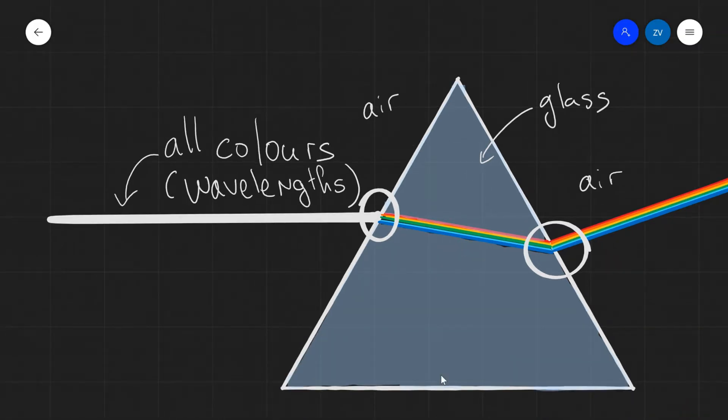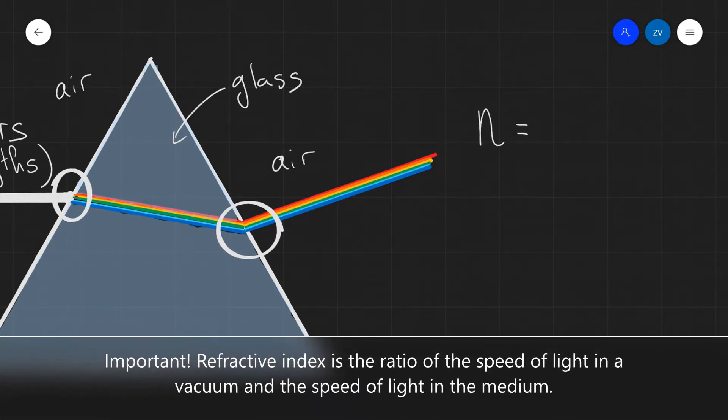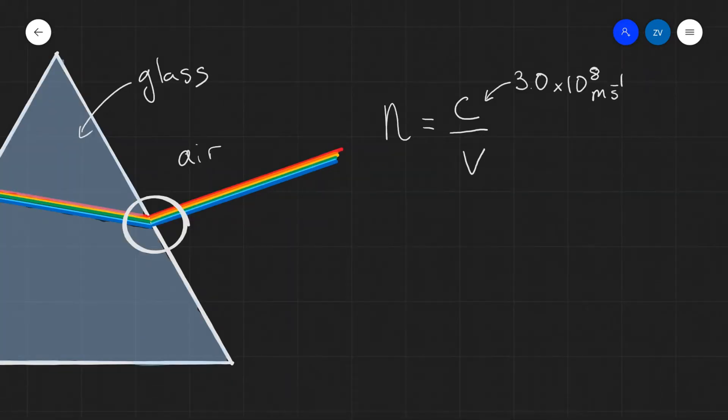How much the light actually bends is determined by the refractive index. Let's have a look. The refractive index, let's call it n, is defined as the ratio between the speed of light in a vacuum divided by the speed of light in that medium. Remember, we are given the speed of light in our formula booklet, so C is equal to approximately 3.0 times 10 to the power of 8 meters per second.